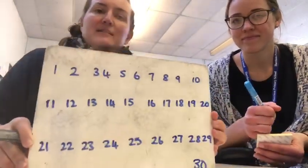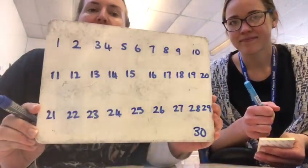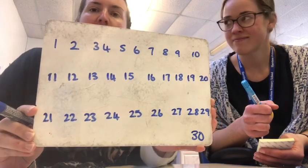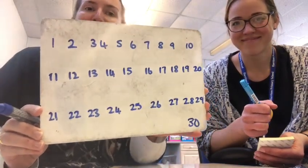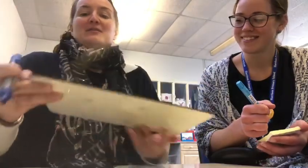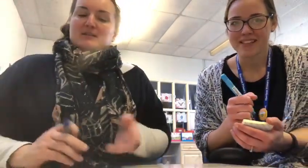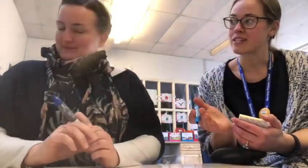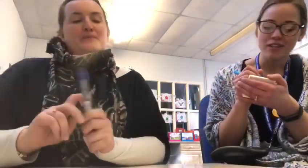This game is called Guess My Number. Ms. Crick and I have decided that we are going to use numbers up to 30. I've written the numbers up to 30 on a whiteboard. You could use a piece of paper and a pencil or maybe a notebook. I'm going to cross off these according to the answers that Ms. Crick gives me to the questions I ask. So I need to choose a number between 1 and 30 because that's our range. I'm going to write it down here.